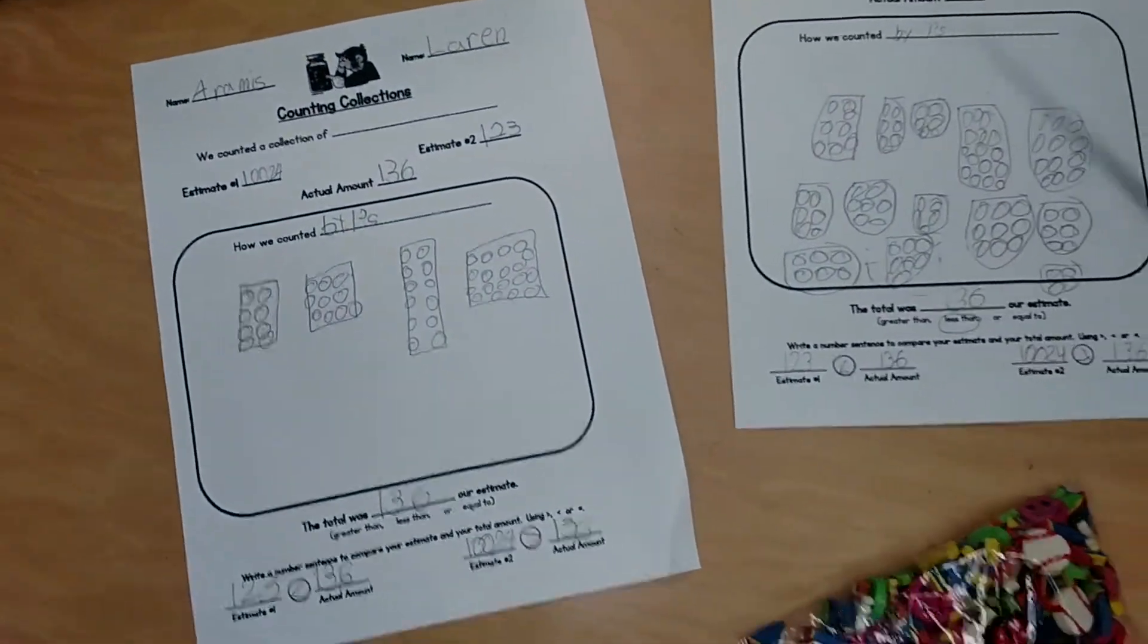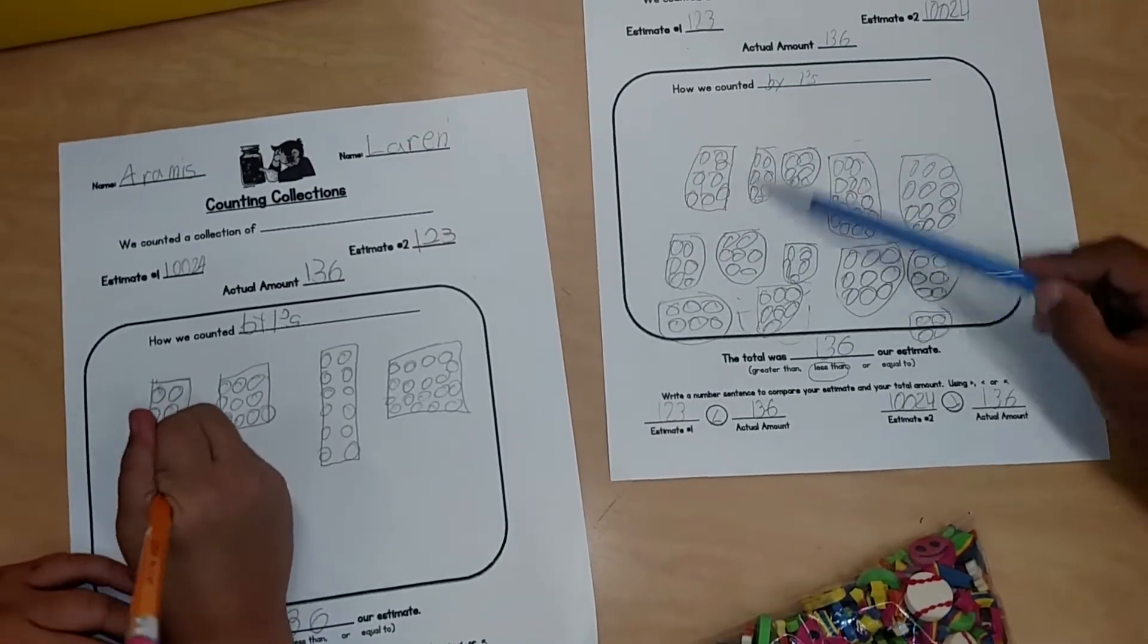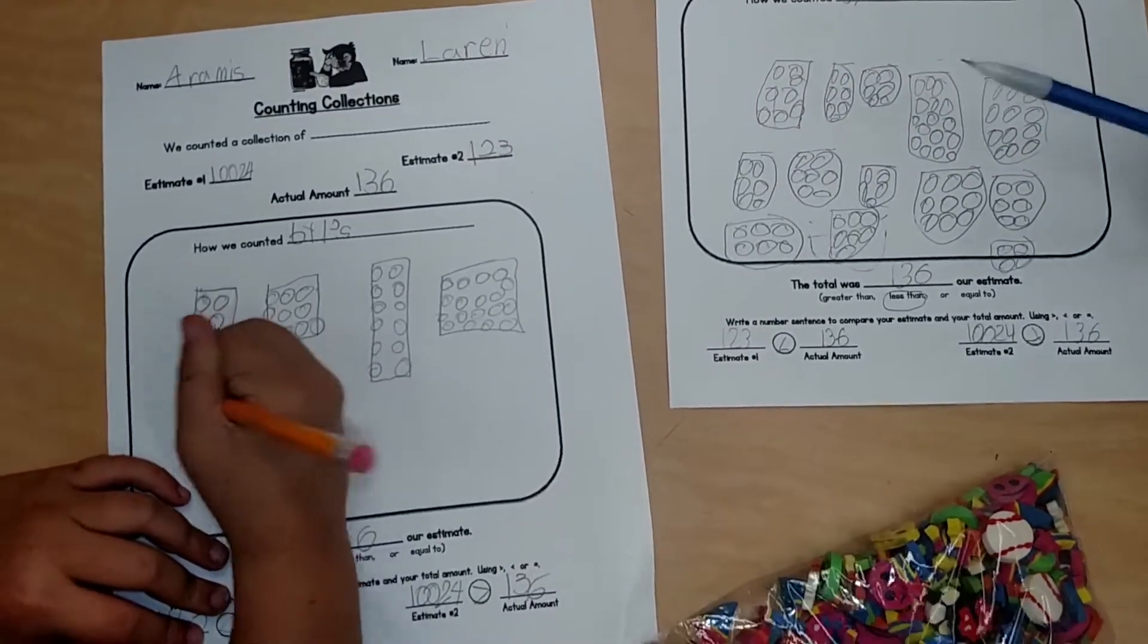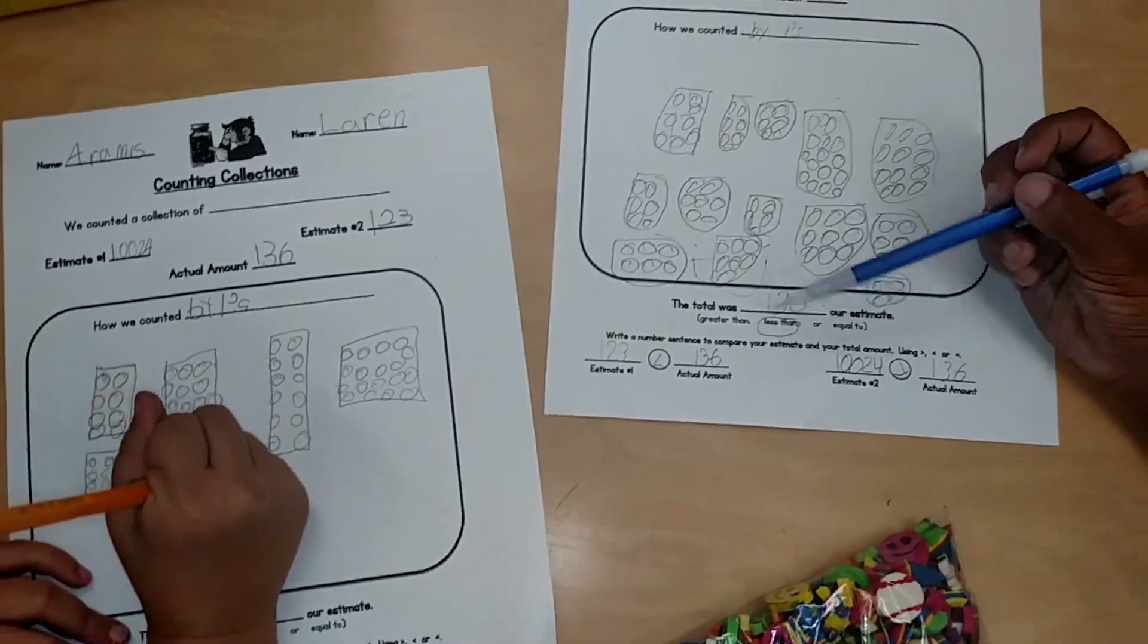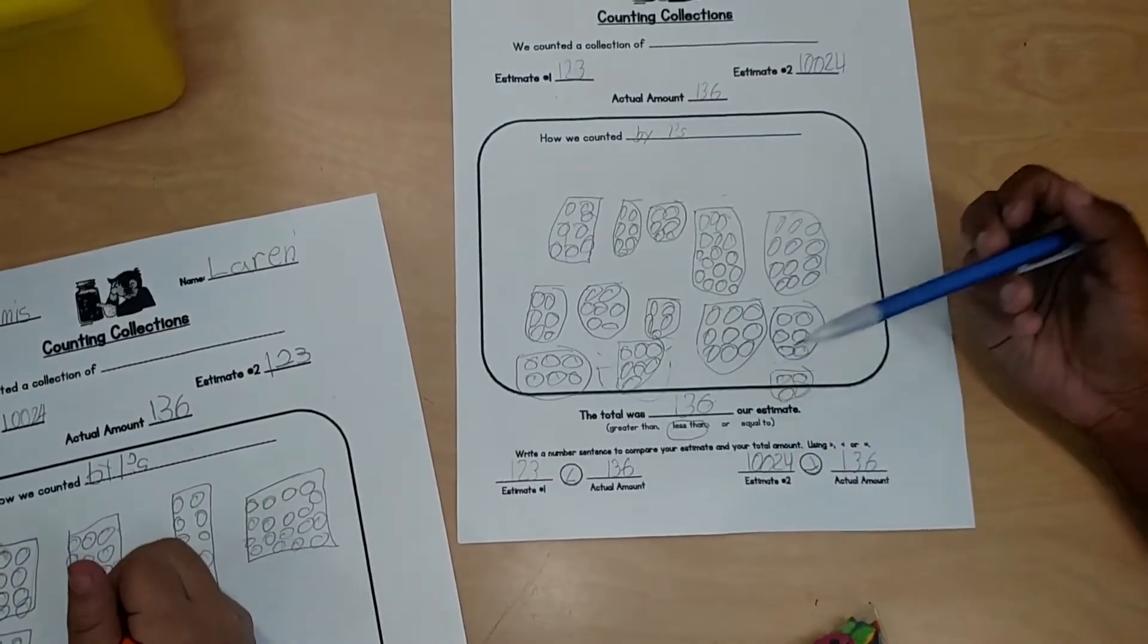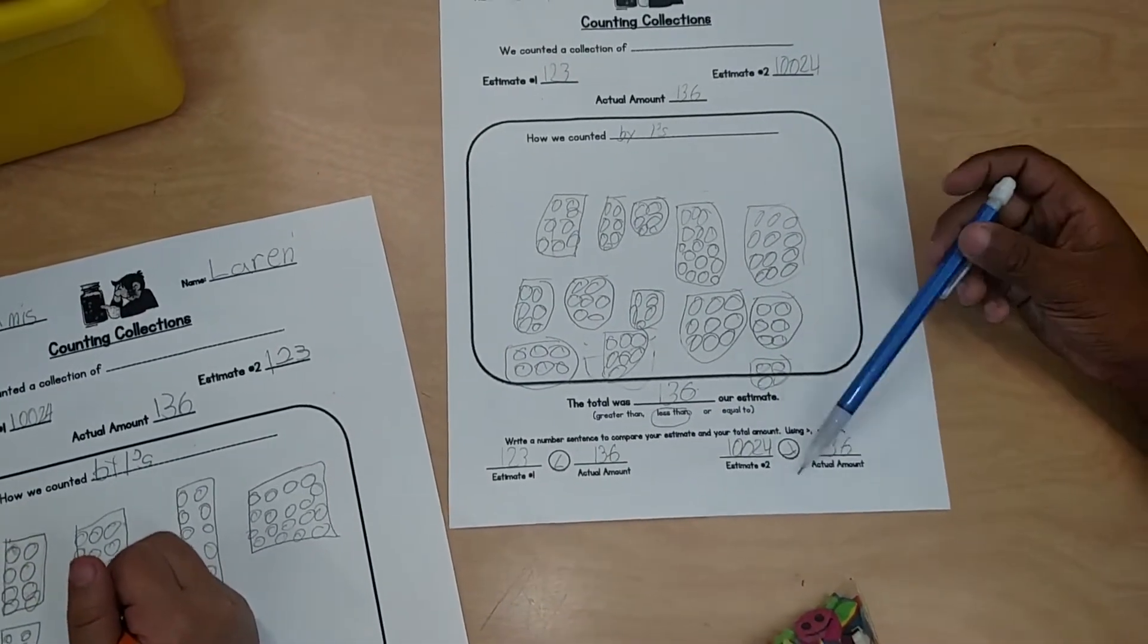Okay, so what happened next? And then, so we got cups and we counted by ones and then those are all the cups we counted. And then, so then we did that. Our total was 136. And our estimate was less than, mine was less than, and then Aramis's was greater.